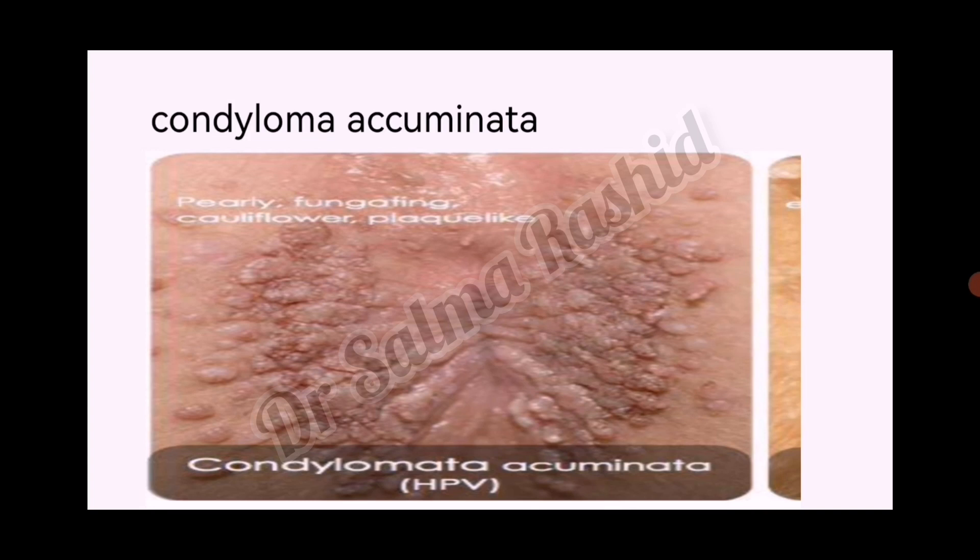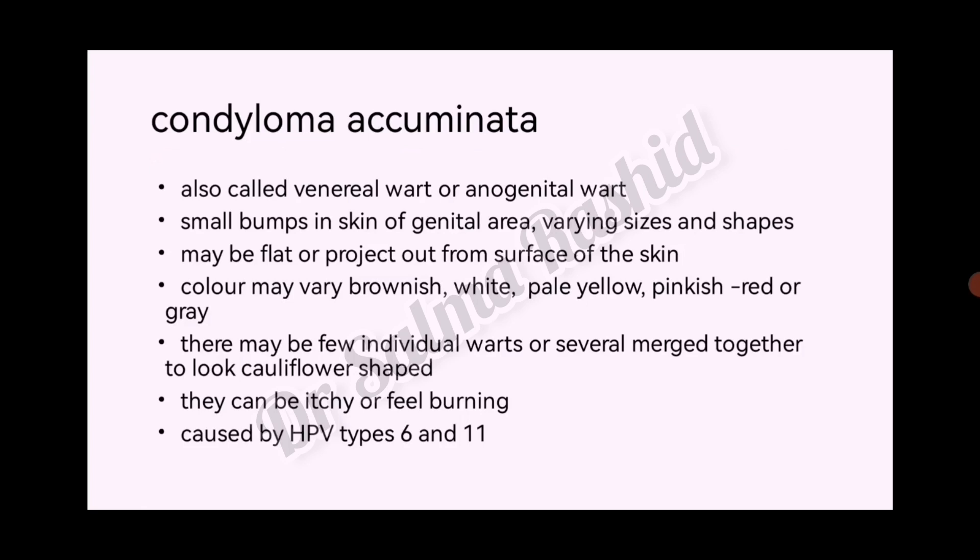This is the picture of condyloma acuminatum, also called venereal warts or anogenital warts. They appear as small bumps in the skin of the genital area, varying in sizes and shapes, and may be flat or project out from the surface of the skin.